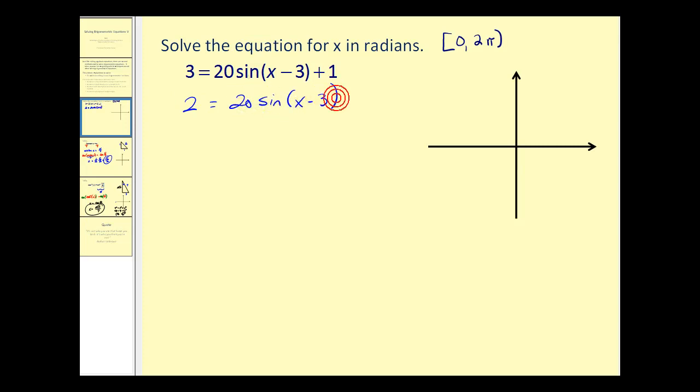That would give us 2 equals 20 sine of x minus 3. Now we'll divide by 20. That will give us 0.1 equals sine of x minus 3.